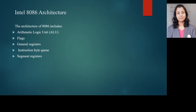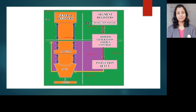Next we can see the Intel 8086 architecture. The architecture includes ALU, flags, general registers, instruction byte queue, and segment registers. In the block diagram of 8086, there are two sections: the Execution Unit (EU) and the Bus Interface Unit (BIU). In the execution unit you can see general registers, operands, ALU, and flags. In the BIU, segment registers, instruction pointer IP, address generation, bus control, and instruction queue are present.